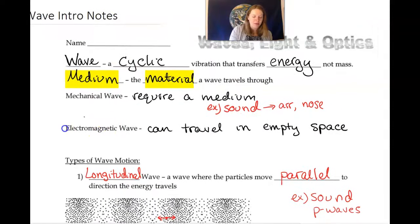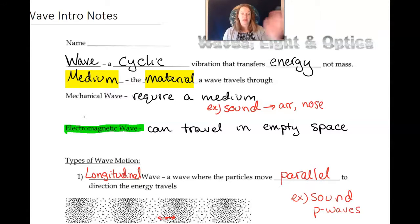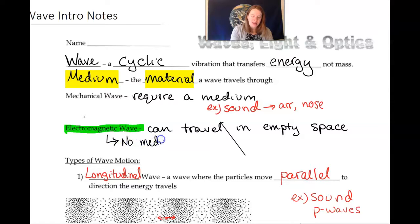So light is a type of wave called an electromagnetic wave. And electromagnetic waves do not require a medium. No medium needed for light to travel.